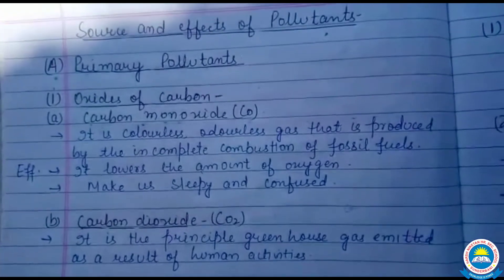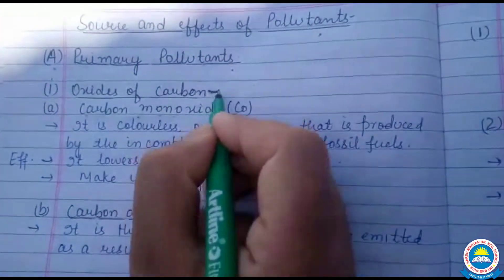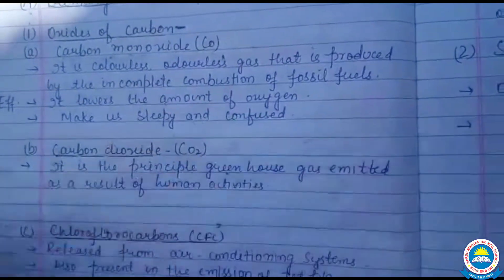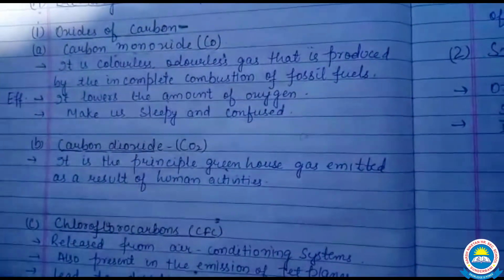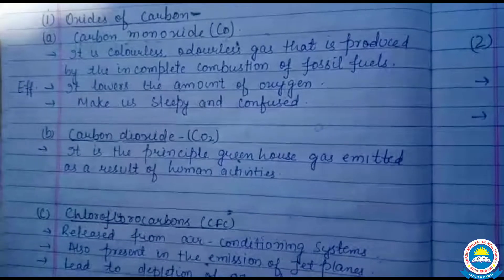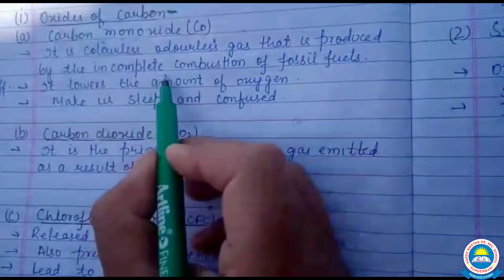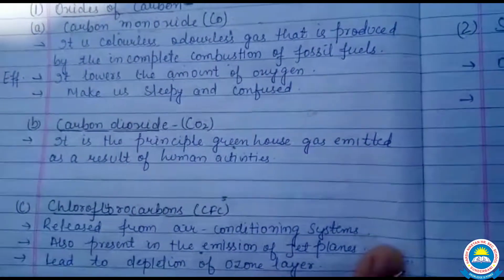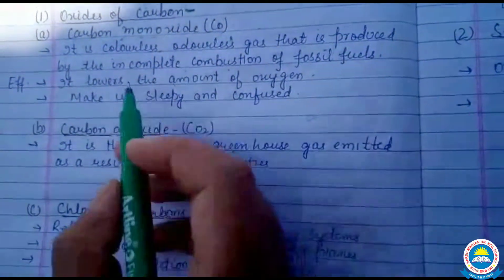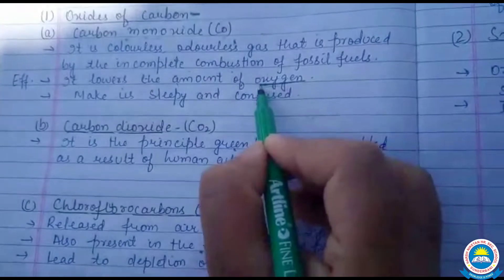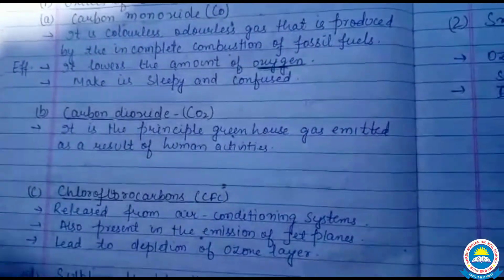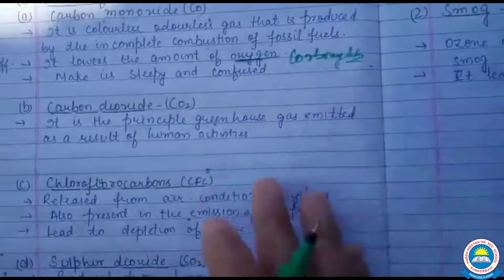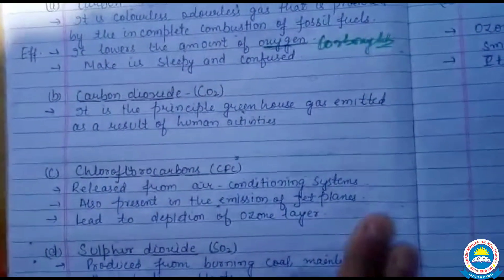Primary pollutants में सबसे पहले पढ़ेंगे oxides of carbon — carbon monoxide और carbon dioxide। Carbon monoxide एक colorless, odorless gas है जो produce होती है by the incomplete combustion of fossil fuels। यह blood circulation में mix होकर carboxyhemoglobin बनाता है जिससे oxygen की amount कम हो जाती है।